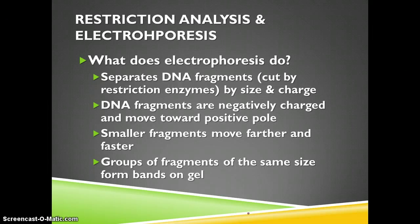Electrophoresis separates DNA fragments by size and by charge. The fragments come from cutting the DNA with restriction enzymes. The DNA fragments are negatively charged, so they are repelled by the negative pole of the electric field and attracted to the positive one. Smaller fragments move farther and faster, and you end up with groups of same-size fragments that form bands on the gel.